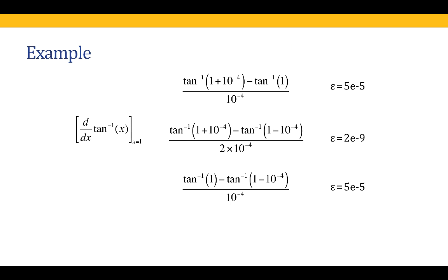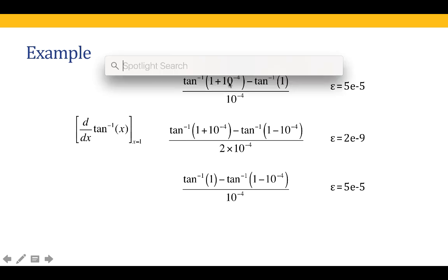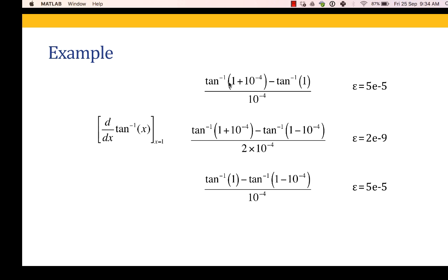The backward difference formula is also given. What we are going to do is take the same example we covered in module 2 — that is arctan of x — and find the forward, central, and backward difference formulae for that particular problem. We will do that for h equal to 10 to the power minus 4. So let us go to MATLAB and do this problem.